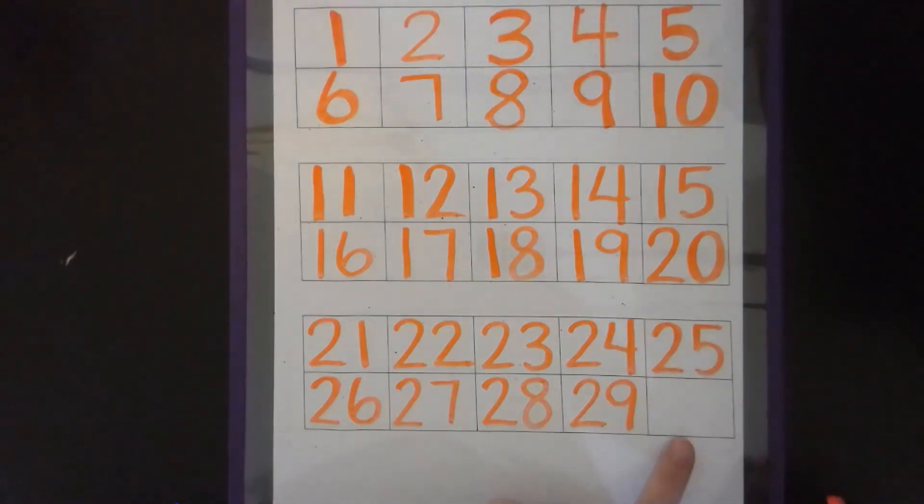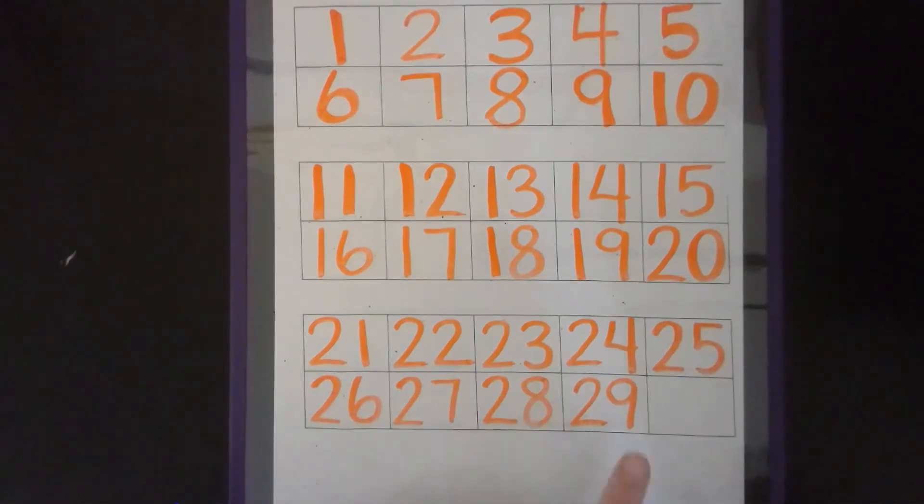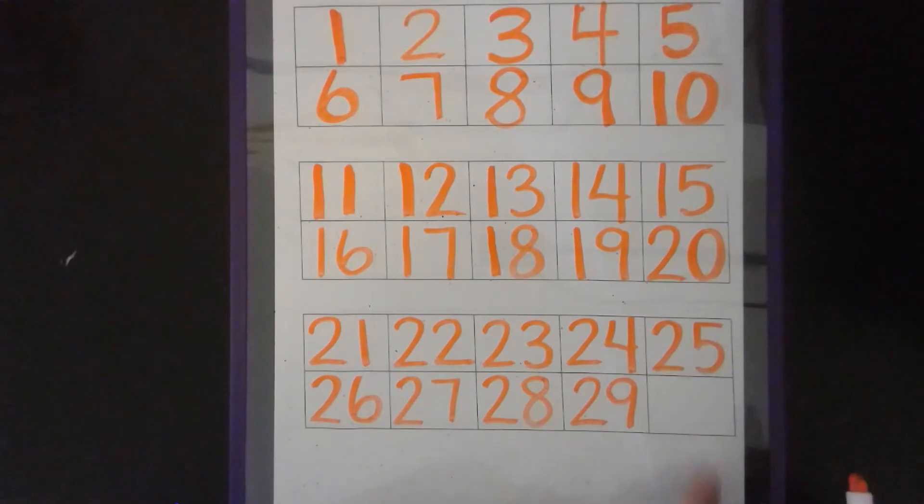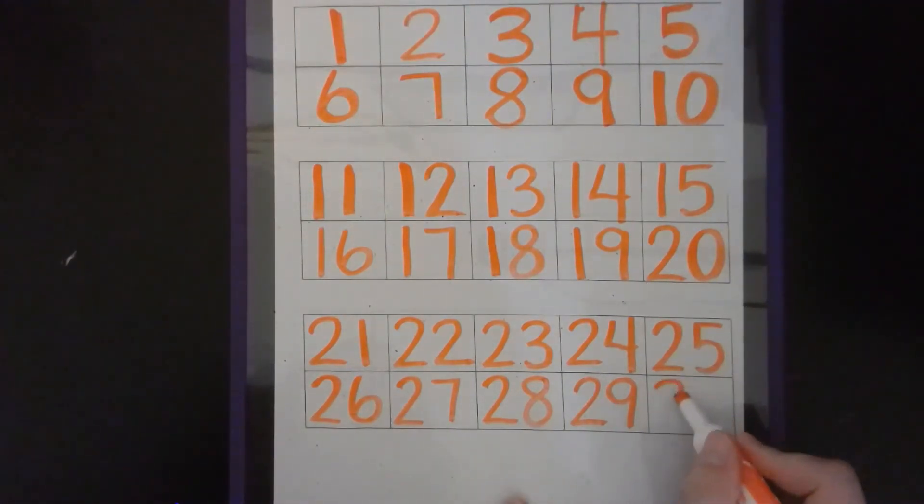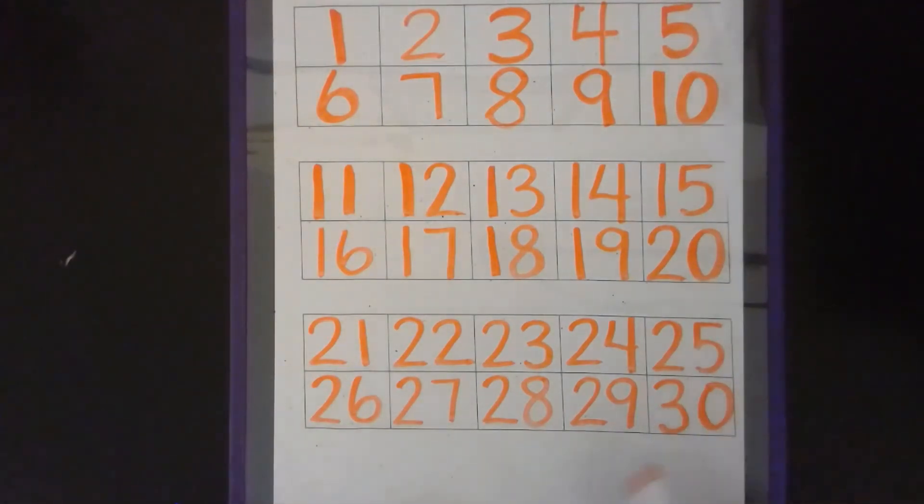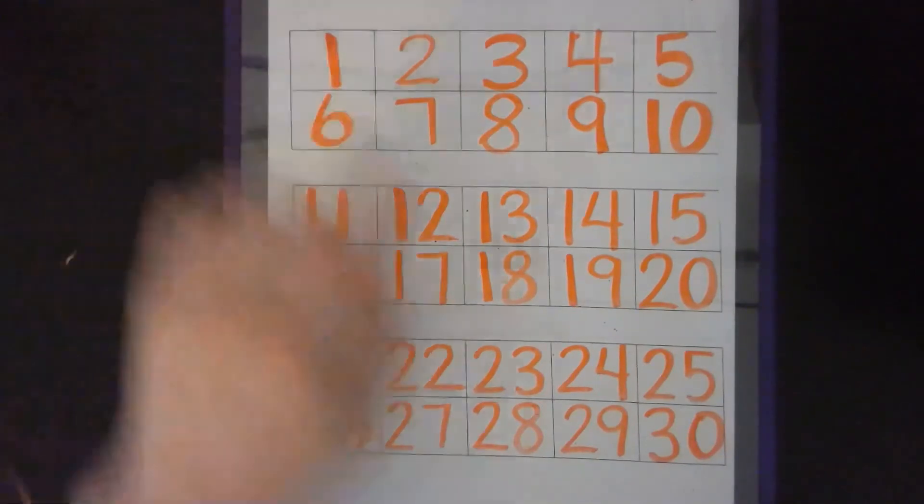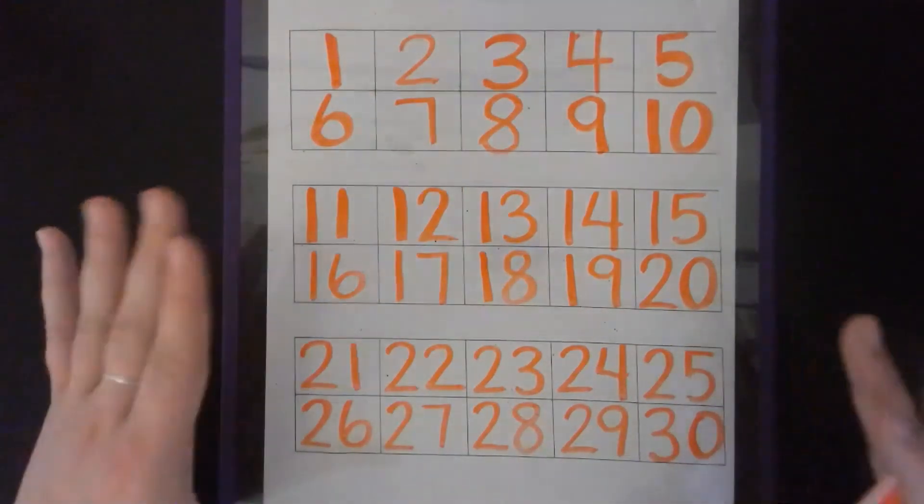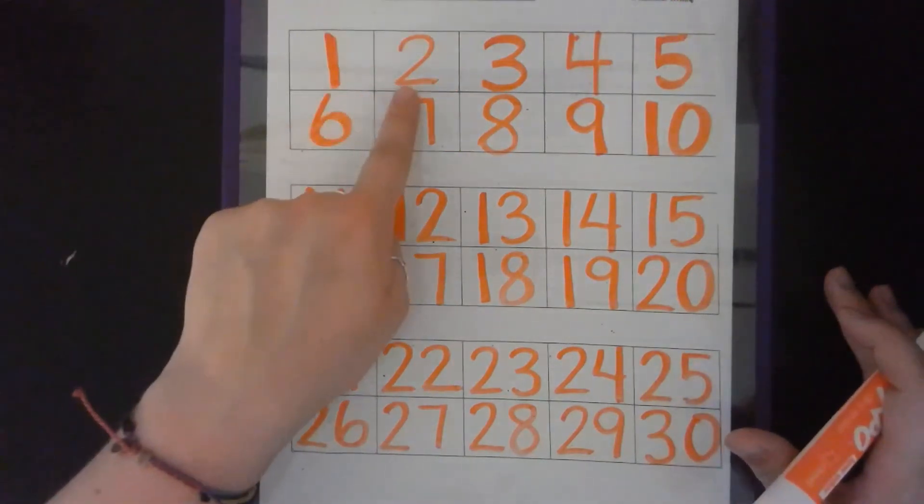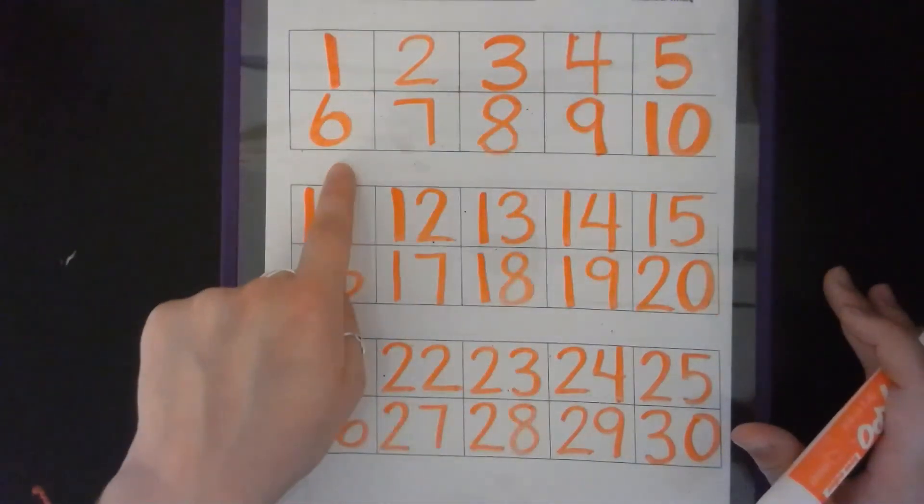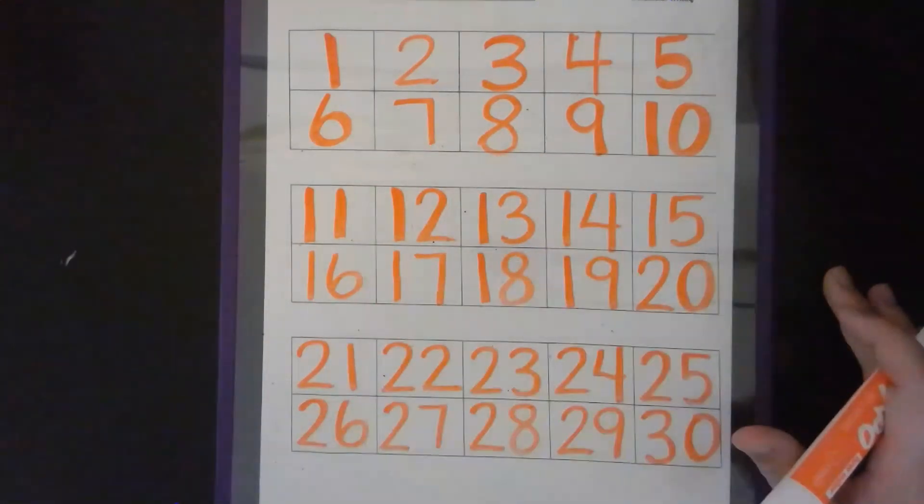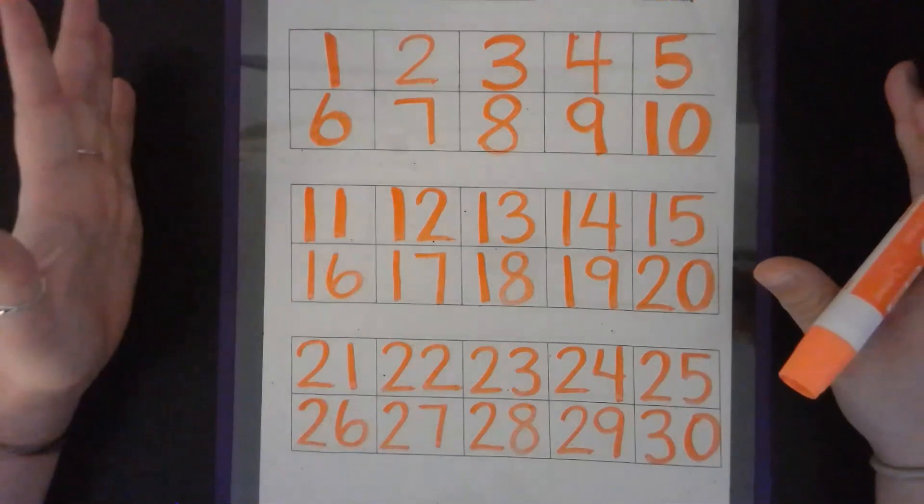What number comes after 29? We have 26, 27, 28, 29, 30. The way we write 30 is a three and a zero. That's the way you make 30 is a three and a zero. Now that we've written all of our numbers from one all the way to 30, I want you to stop, pause this video, look at every single one of your numbers and fix them if they don't look just like mine. After you've checked all of your work, it's now going to be your turn for your assignment.